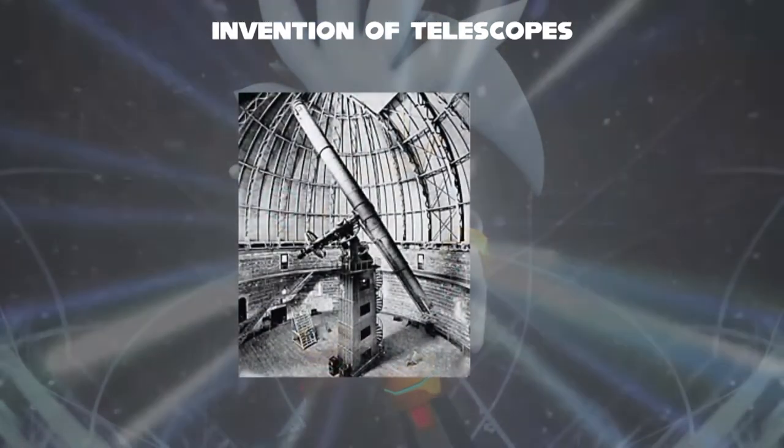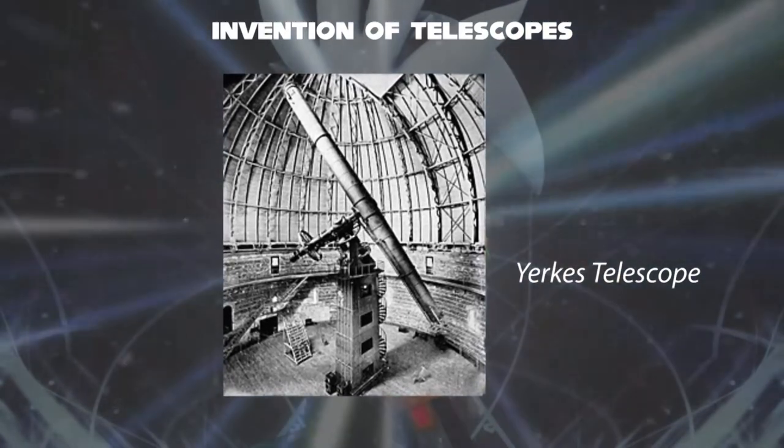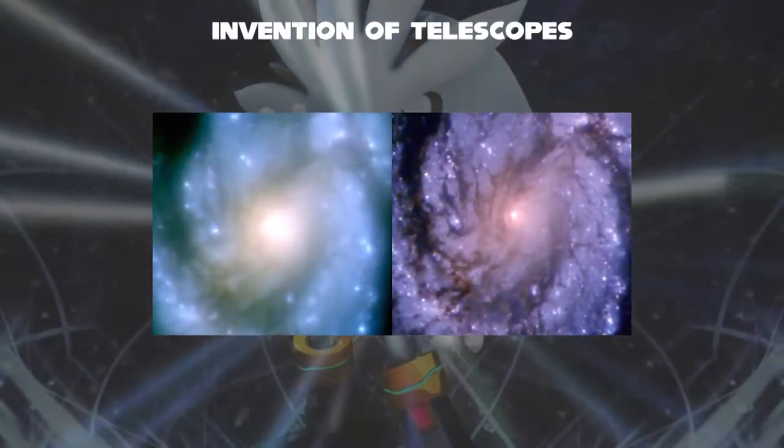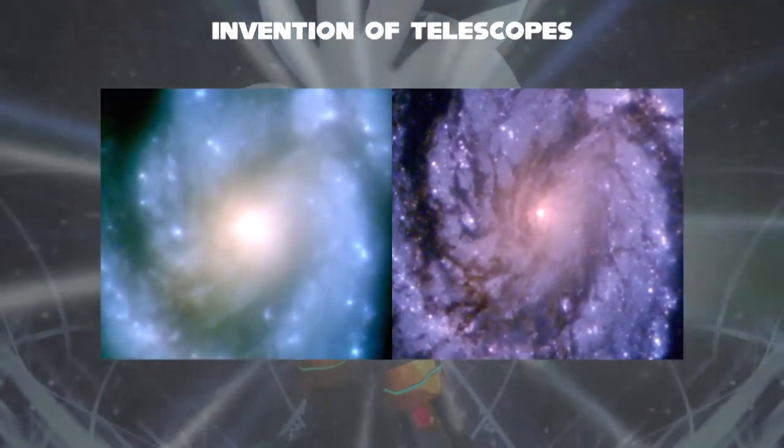During the 1850s, reflectors suffered from problems with speculum metal mirrors, and a considerable number of great refractors were built from 60 cm to 1 m aperture, culminating in the Yerkes Observatory Refractor in 1897.